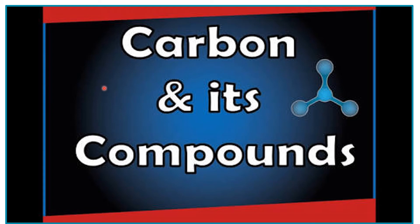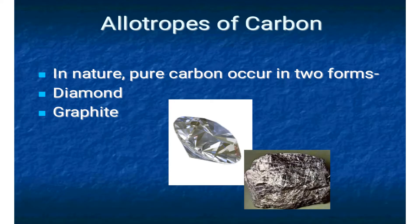Hi students, welcome to chemistry class of grade 10th. Today's class is a continuation of carbon and its compounds. In the previous class I explained the occurrence of carbon and its versatile nature — that is, for an element to exist in different forms, or having multiple nature, is known as versatile nature. Carbon has this multiple nature and can behave in multiple ways, for example through catenation, allotropic forms, and forming multiple bonds.